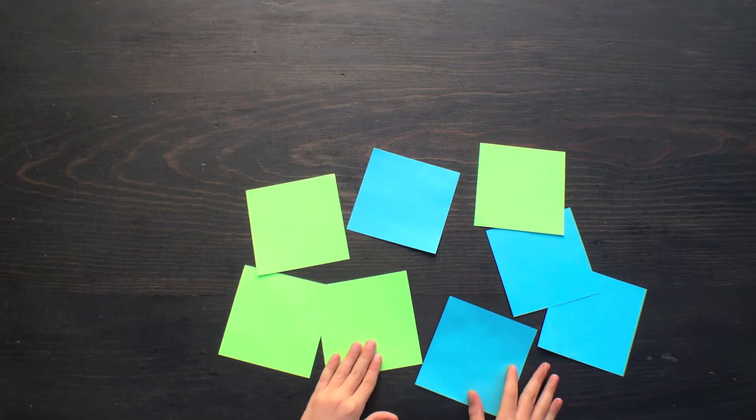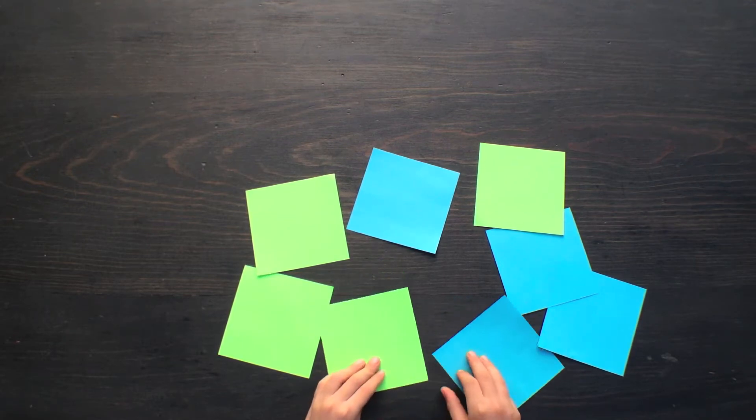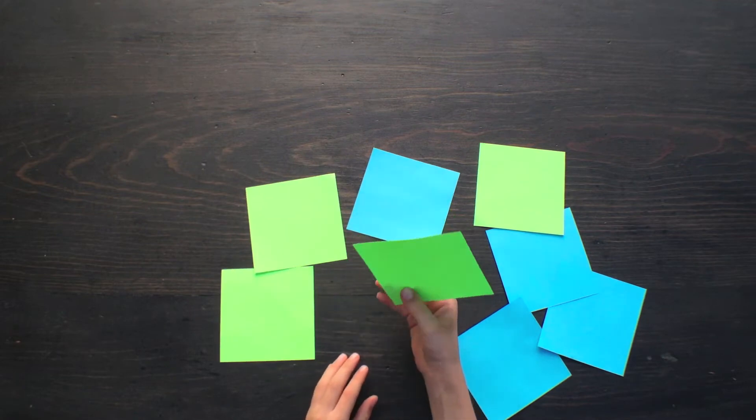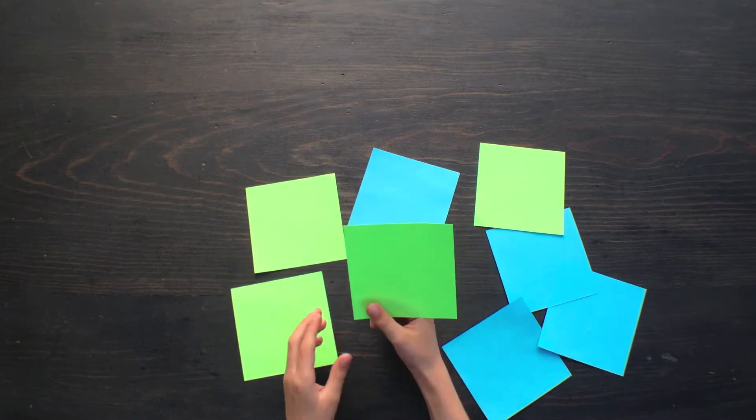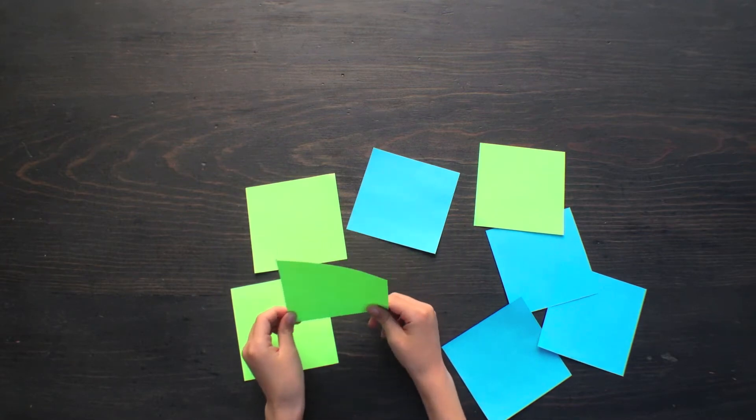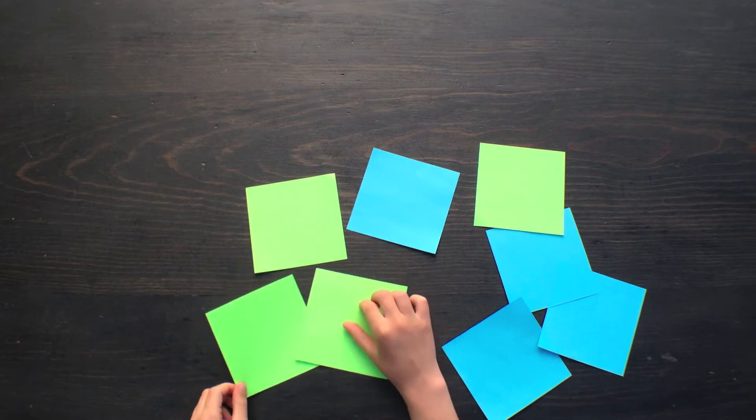Today I will teach you how to make the transforming ninja star. You'll need square pieces of paper like this, and if you want it to look really cool, they'll have to be different colors. Let's begin.